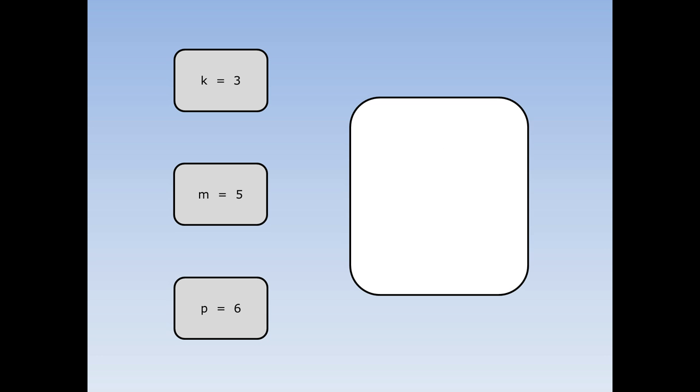k is 3, m is 5, and p is 6. What does kp equal? kp means k times p. We can swap k for a 3 and the p for a 6. 3 times 6 is 18, so kp equals 18.